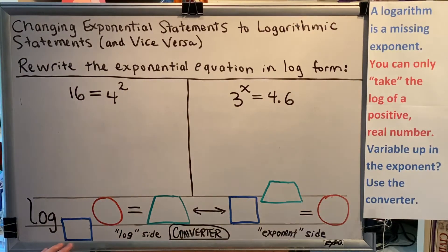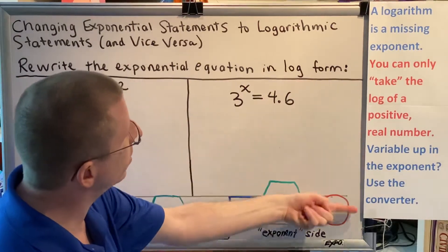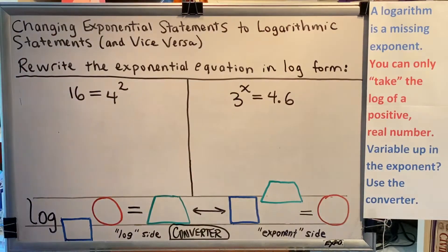On the right side we have an equation that is in exponential form, so I'll call this the exponent side. On the left side we have an equation that's in logarithmic form, so we'll call this the log side. The entire line is referred to as the converter and the converter is going to be referred to several points throughout this particular video series.